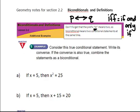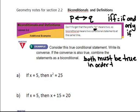Alright, so I want to give you this example and it says, consider this true conditional statement. So they're saying to you this is a true statement. Write its converse and if the converse is also true, combine the statements as a biconditional. So you can only write a biconditional if both the conditional and the converse are true. Both must be true in order to write a biconditional.